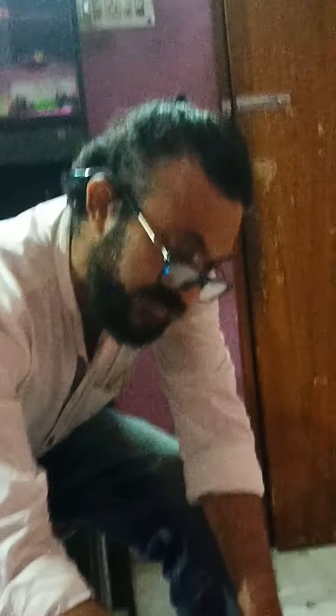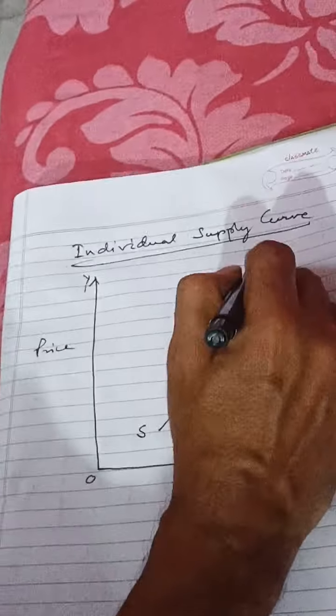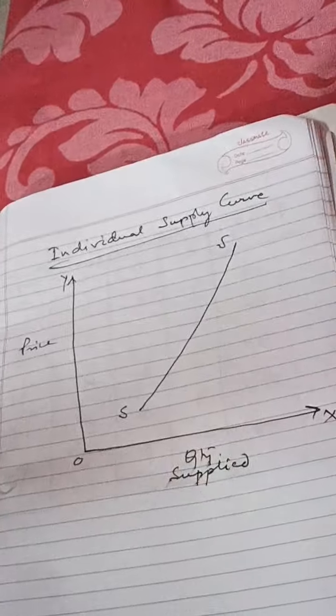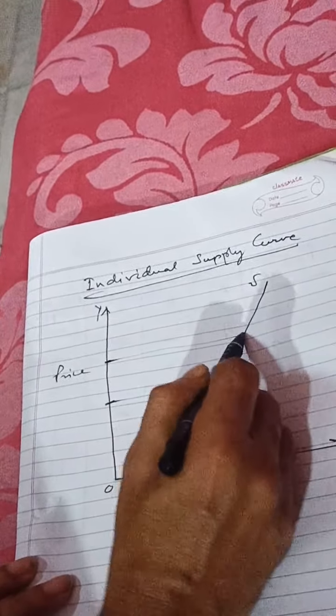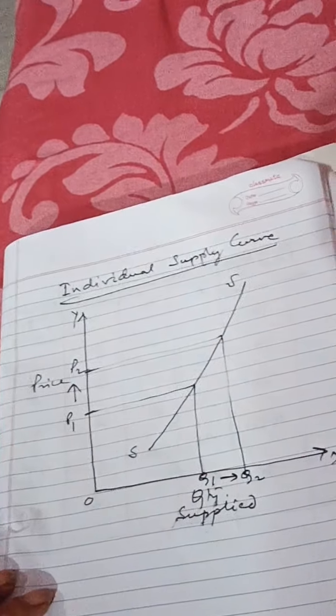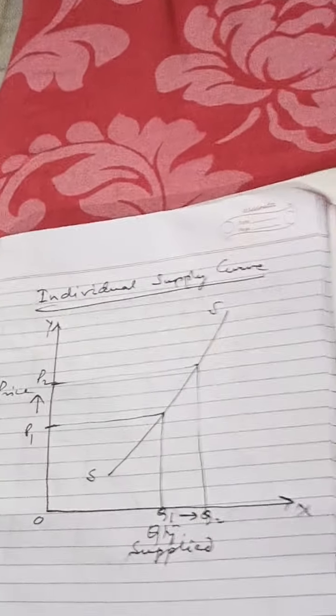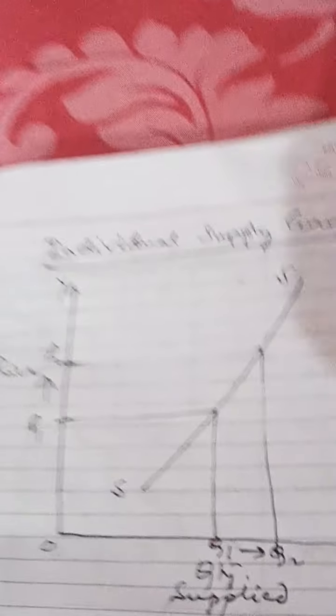For the individual supply curve graph: along the X-axis we measure quantity supplied (Qs), and along the Y-axis we measure price. The curve Sa is upward sloping. For example, if price rises from P1 to P2, the quantity supplied rises from Q1 to Q2. This upward slope reflects the law of supply — price and quantity supplied move in the same direction.